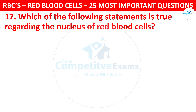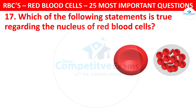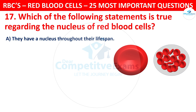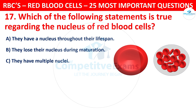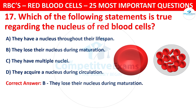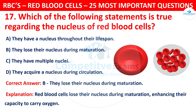Question 17. Which of the following statements is true regarding the nucleus of red blood cells? The options are: they have a nucleus throughout their lifespan; they lose their nucleus during maturation; they have multiple nuclei; or they acquire a nucleus during circulation. The correct answer is B — they lose their nucleus during maturation. Red blood cells lose their nucleus during maturation, enhancing their capacity to carry oxygen.